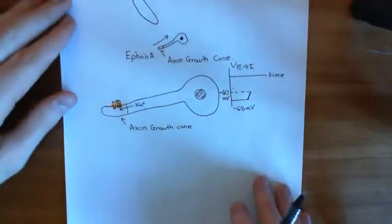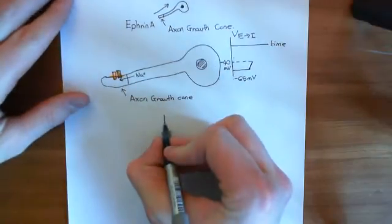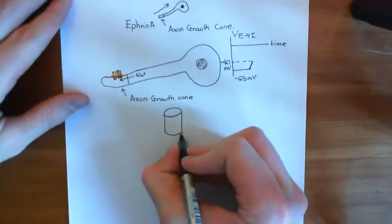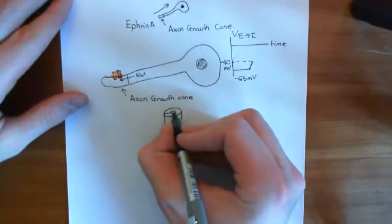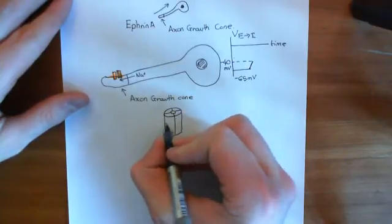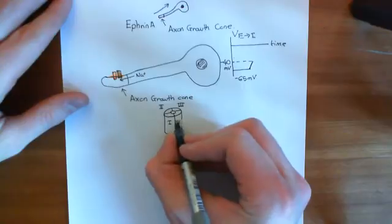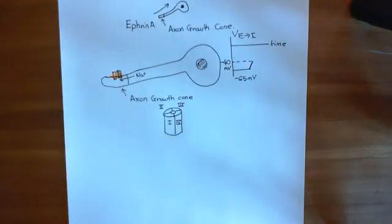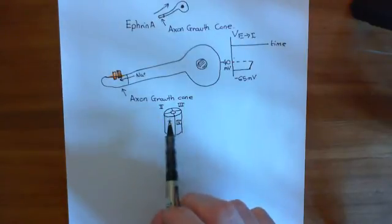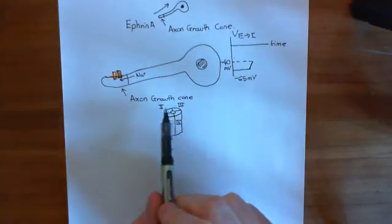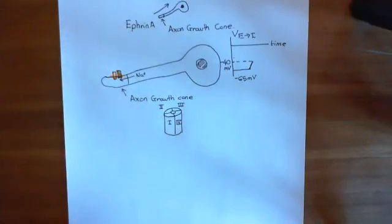Let me go over the structure of a voltage-gated sodium channel. The pore-forming unit of the voltage-gated sodium channel can be divided into four domains: domain 1, domain 2, domain 3, and domain 4. This entire pore-forming unit is a single polypeptide — even though we divide it into four domains, the actual whole thing is one polypeptide. It's encoded by one gene, one continuous polypeptide. The entire pore-forming unit of the voltage-gated sodium channel is a single polypeptide, and that is known as the alpha subunit.